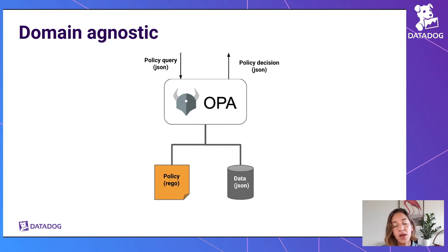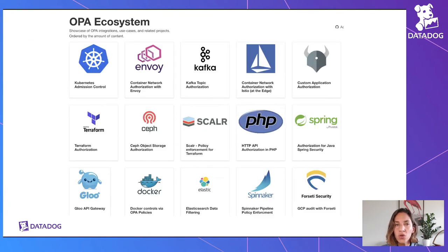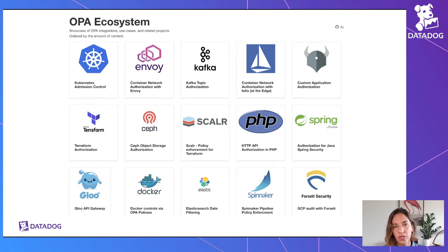Now that you have that decision in JSON, how do you enforce it for your software? You do that through any of the integrations available. If you go to the OPA website, you can see there are a lot of integrations already there, and many more come in all the time because it's very domain agnostic — it's just JSON.